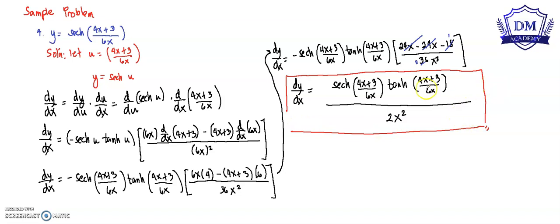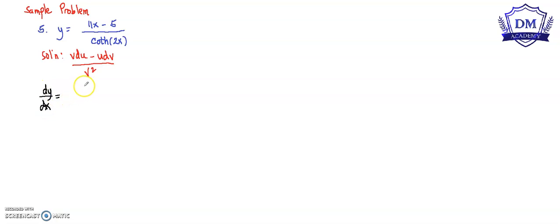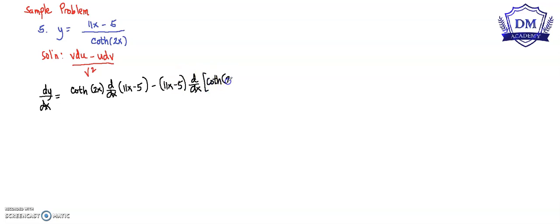Let's have another problem. The function y is equal to (11x − 5) all over the hyperbolic cotangent of 2x. Our solution uses the quotient rule: v du minus u dv, all over v squared. So dy/dx equals the hyperbolic cotangent of 2x multiplied by the derivative of (11x − 5), minus (11x − 5) multiplied by the derivative of the hyperbolic cotangent of 2x.